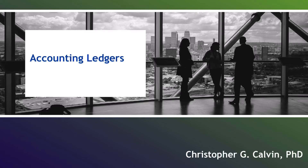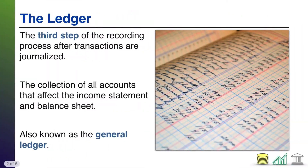Hi, everyone. In this video, I'm going to introduce you to the idea of accounting ledgers. What is a ledger, or the collection of ledgers? This is the third step of the accounting cycle. The first step is analyzing economic transactions, the second step is recording those transactions using journal entries.